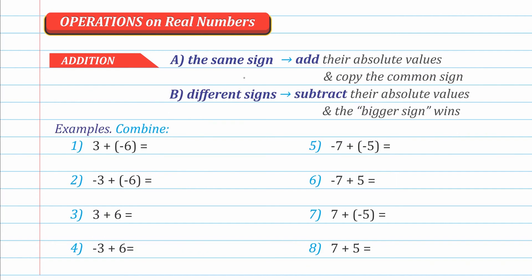Let's summarize: when adding integers with the same sign, add their absolute values and copy the common sign. When adding integers with different signs, subtract their absolute values and the bigger sign wins. Remember: same sign — you add; different signs — you subtract.